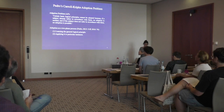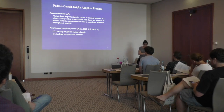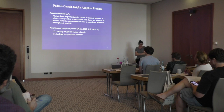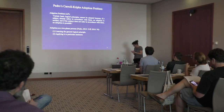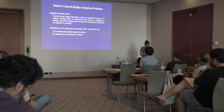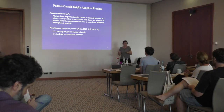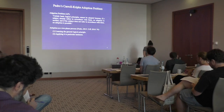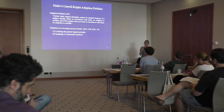Here is how Padró describes the adoption problem: certain basic logical principles cannot be adopted, because if a subject already infers in accordance with them, no adoption is needed, and if the subject does not infer in accordance with them, no adoption is possible. So we have to somehow think we come equipped with these principles — we never get to adopt them. She describes adoption as a two-stage process: first we learn general principles such as modus ponens, then we apply them in reasoning, and she argues this leads to a kind of vicious circularity.